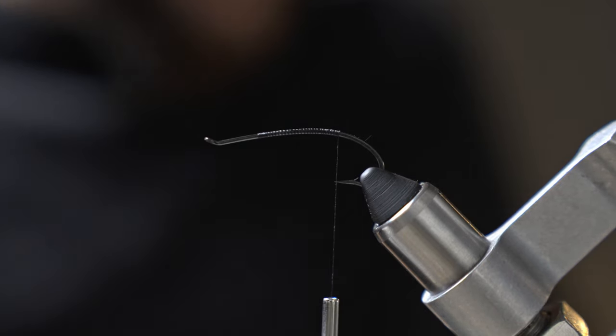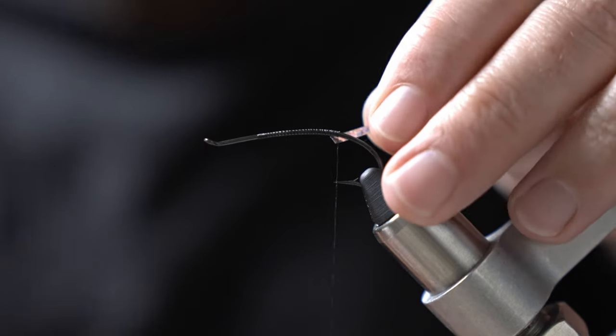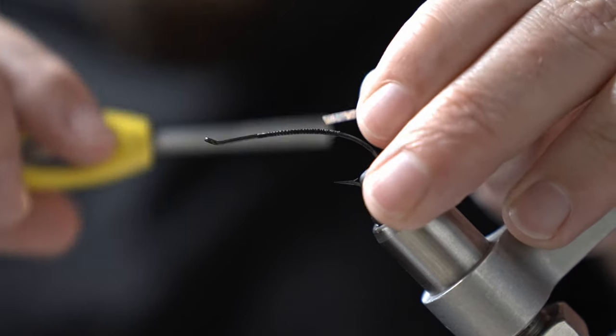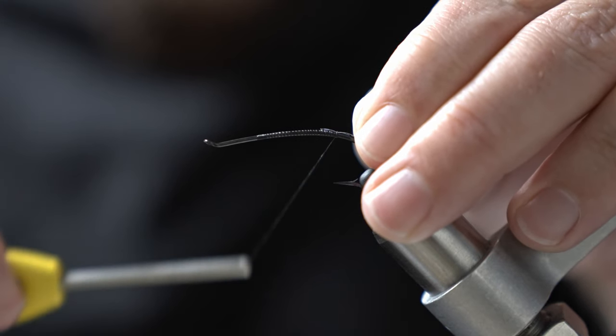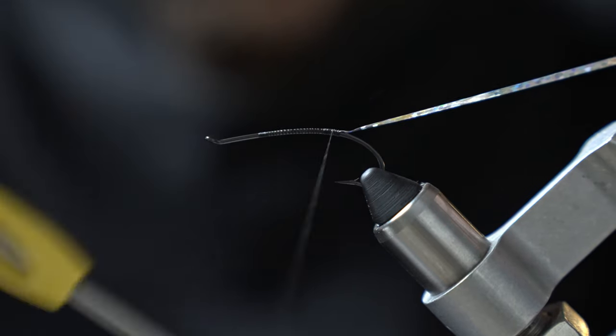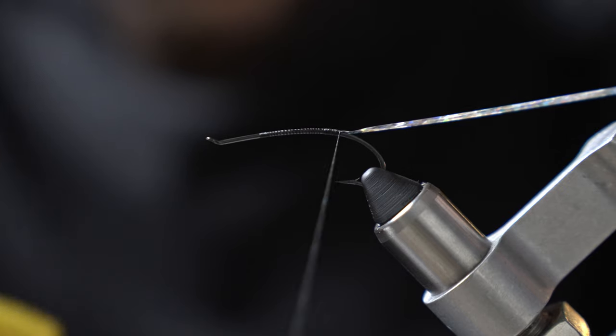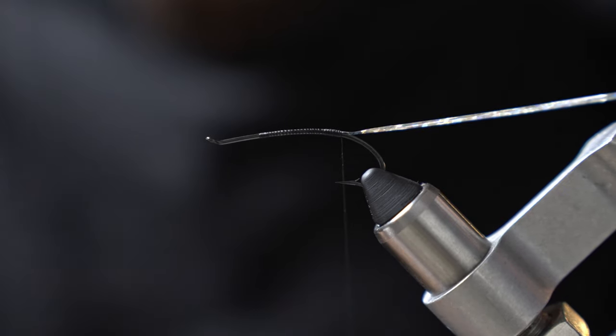And for our tag end today we're going to tie in just some holographic tinsel. Most of these traditional style summer steelhead flies you'll see with just standard silver tinsel. You see gold on some of them. This fly we're going to be going a little bit flashy with.